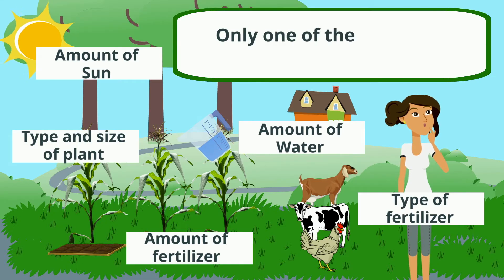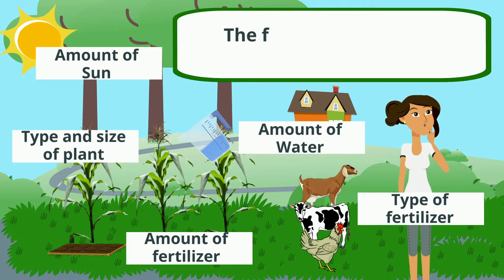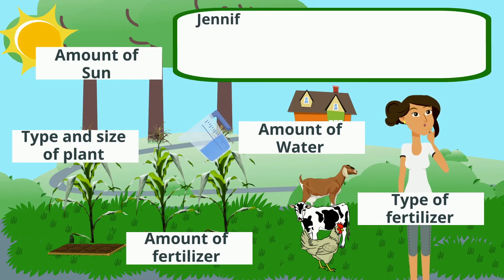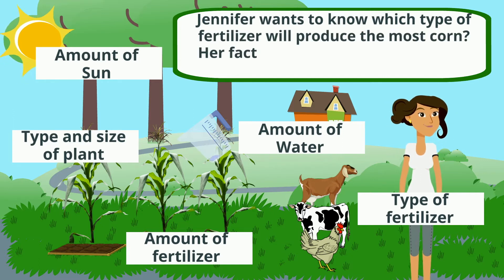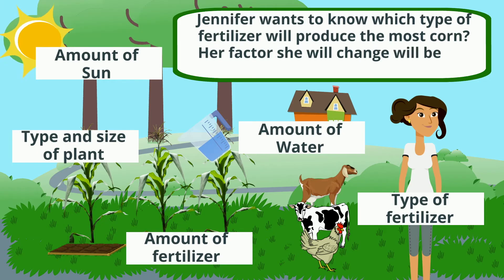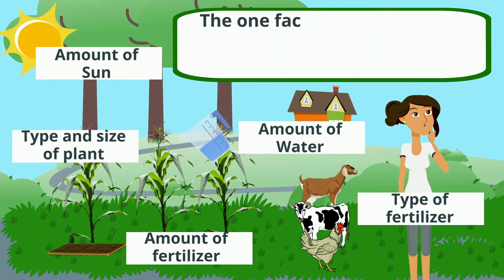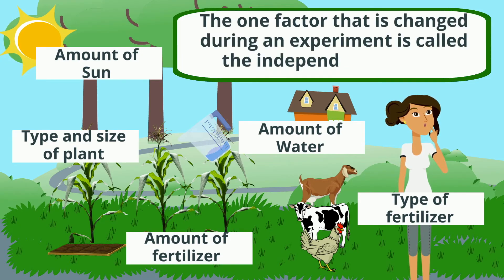Only one of these factors should be changed. The factor you change is dependent upon your question. Since Jennifer wants to know which type of fertilizer will produce the most corn, the factor she will change is the type of fertilizer. The one factor that is changed during an experiment is called the independent variable.